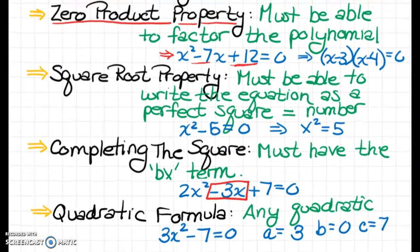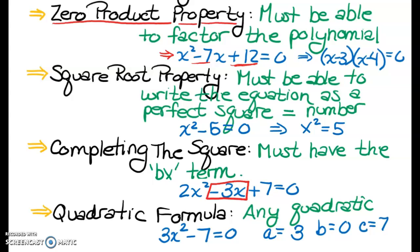The next method we've learned recently is the square root property. We have to be able to write the equation as a perfect square that equals a number. If we're given an equation similar to this, we can move the constant to the other side and get a perfect square equal to a number, then use the square root property to solve.